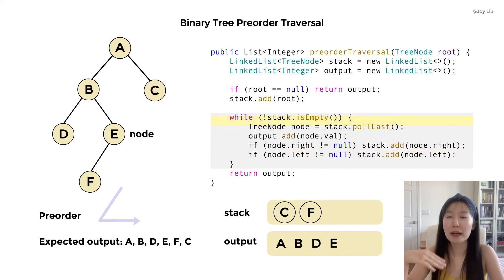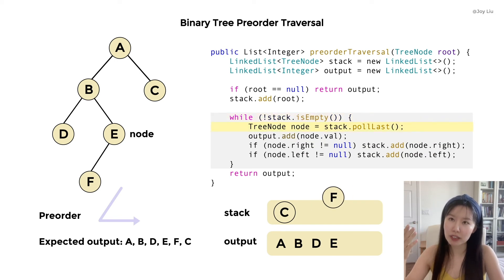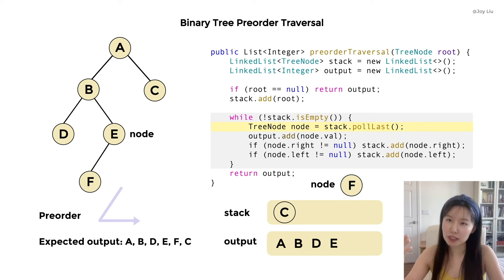Look back again — not empty. We pull out the last element and delete it from the stack. Name it as node. Now node switches from E to F.